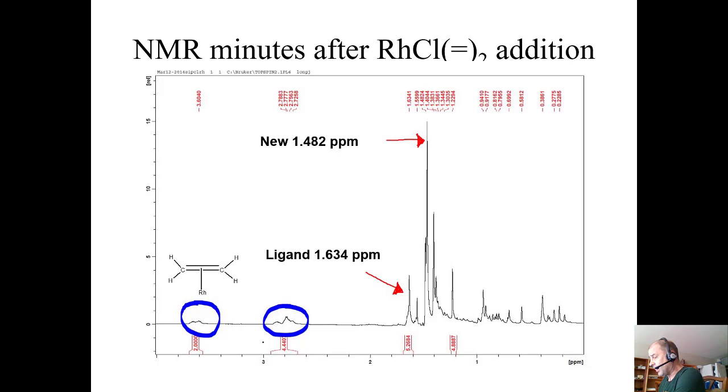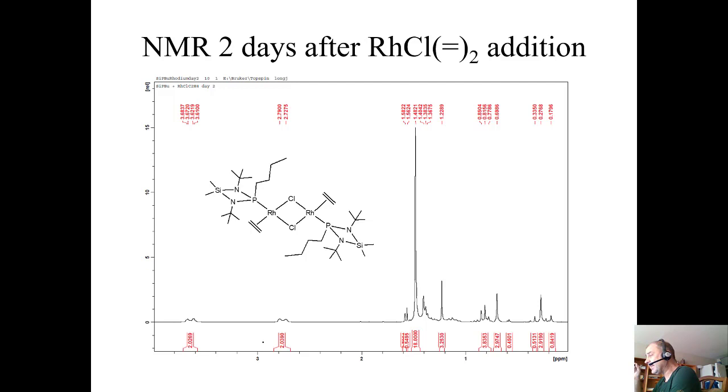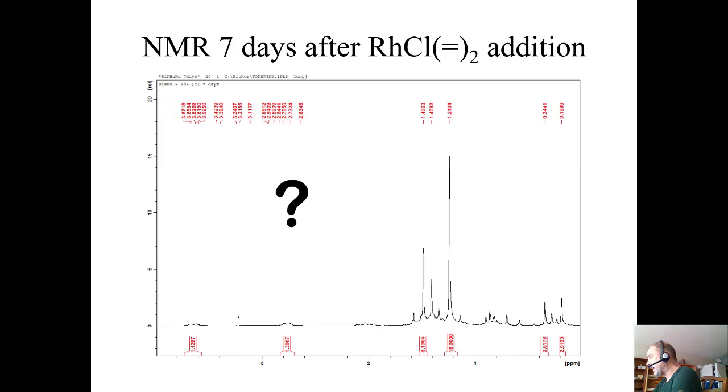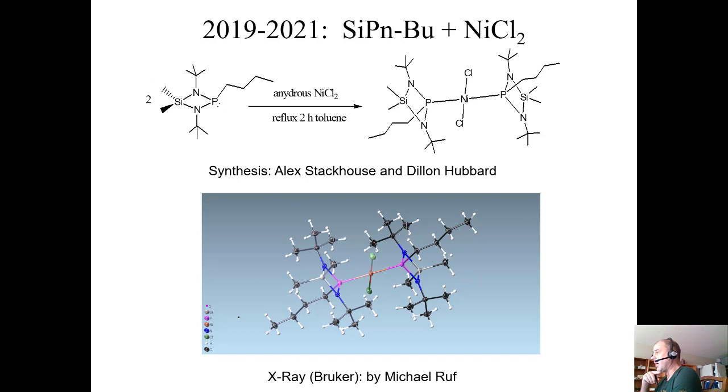After two days, you get a pretty clean spectrum. That ligand peak is completely gone. All you have is 1.482 and those coordinated ethylenes. I'm proposing this is this particular structure. I was hoping it would crystallize in the Young tube, so just chilled it down, but it did not work. When I checked after seven days, it was completely decomposed. Unfortunately, this is something I would love to pursue. If somebody wants to give me $10,000 for rhodium, I will do that. In the meantime, I'm just going to go back to working with nickel.